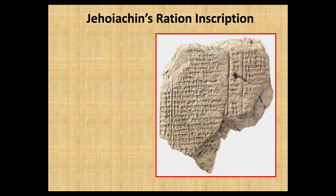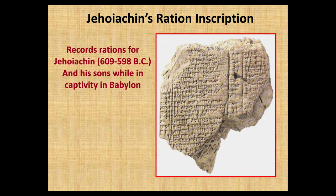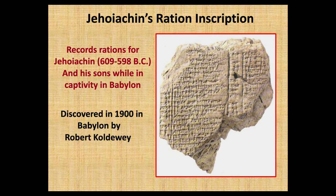The Babylonians took many captives in their invasions and took them to the city of Babylon. Of all things, they kept records of what they fed their captives. Jehoiachin was one of the kings from Judah who was taken, and it's actually been found in an inscription how much they fed him. This records rations for Jehoiachin from 609 to 598 BC, and also includes his sons while they were captive. Discovered in 1900 in Babylon. You can read about this in 2 Kings chapter 25.